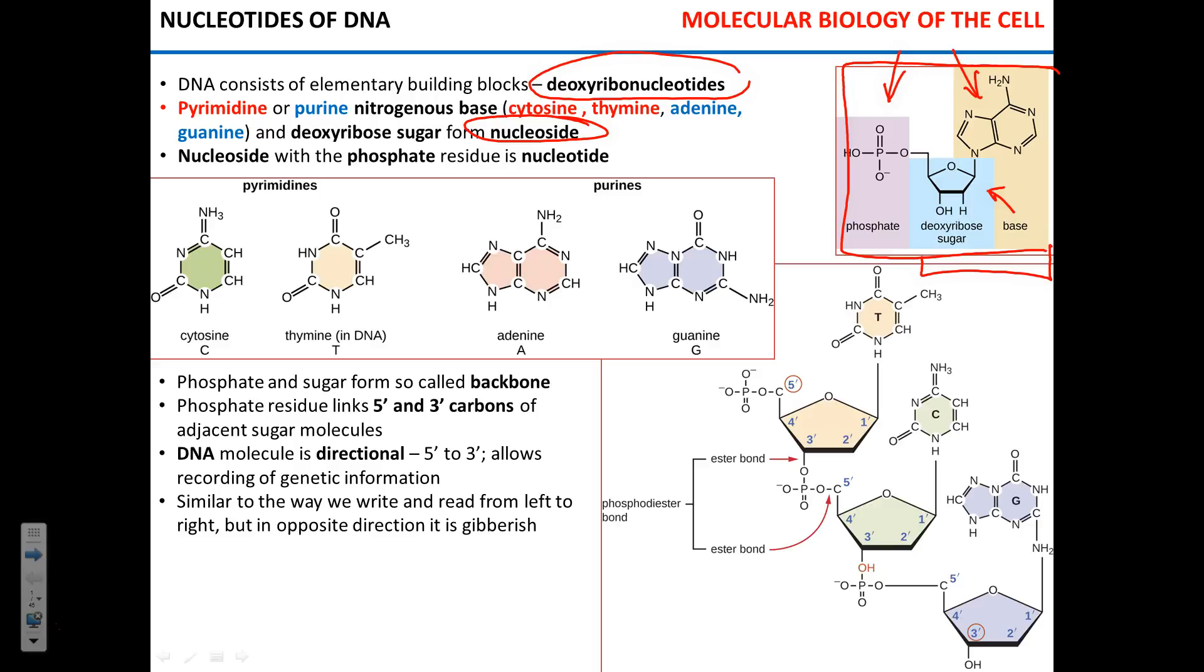There are four different nitrogenous bases that can be found in the DNA molecule. Two of them belong to the class of pyrimidine molecules, cytosine and thymine. Pyrimidine is just the name of the compound that contains this six, this hexagonal structure. Another two, adenine and guanine, belong to purines, and purine is the compound that contains this structure.